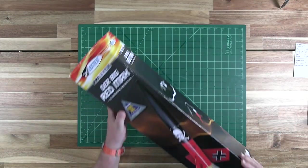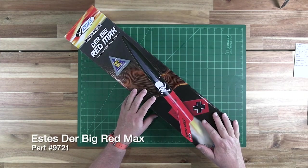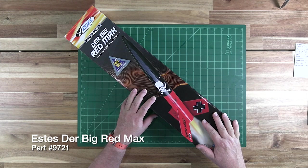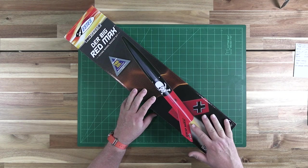It is my humble opinion that the Estes Der Big Red Max kit is the greatest starting point for kit bashing, scratch building, modification, cloning, whatever that the company has ever released. Think of the Big Red Max as a really cool set of parts.